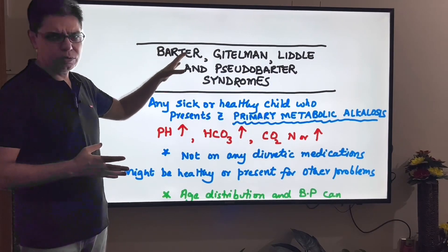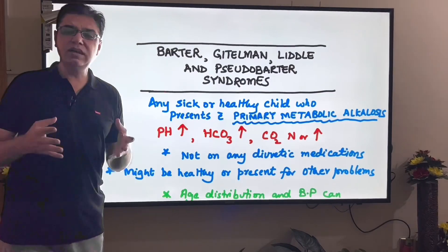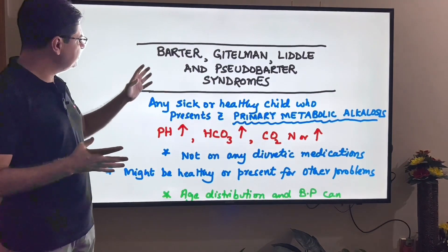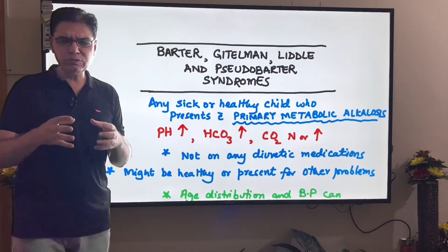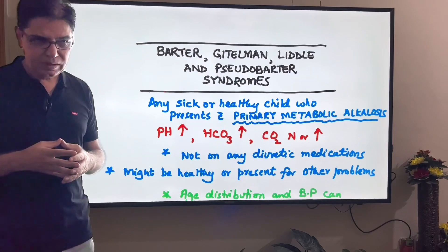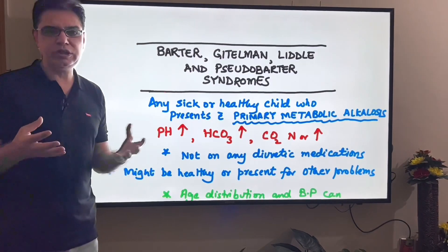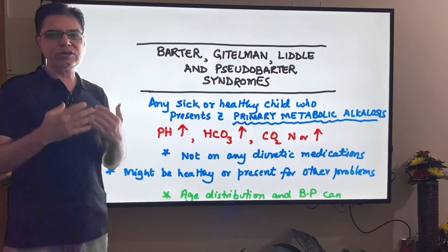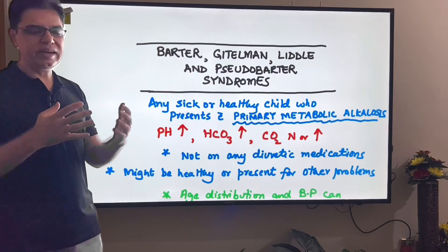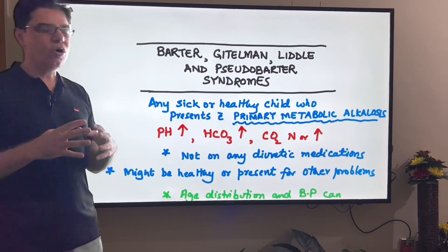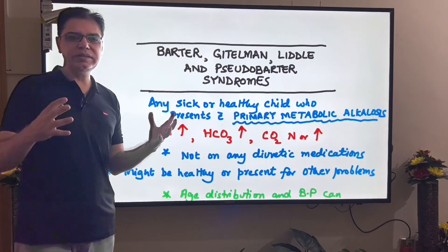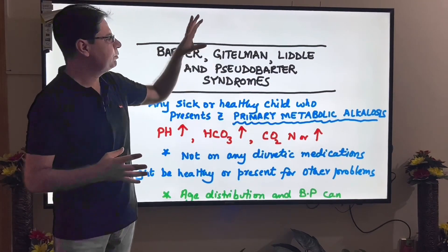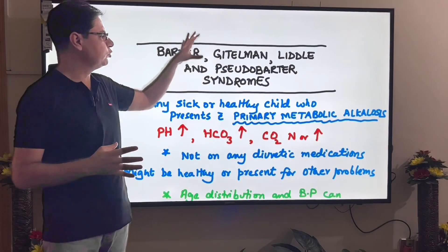You might have heard about these syndromes — Bartter, Gitelman, and Liddle syndromes. These are part of a group of disorders known as renal tubulopathies or channelopathies. Basically, in these syndromes there is a microscopic level problem in the renal tubules — a problem with the sodium-potassium co-transport channel, the magnesium channel, or the chloride channels — leading to loss of certain electrolytes in the urine.